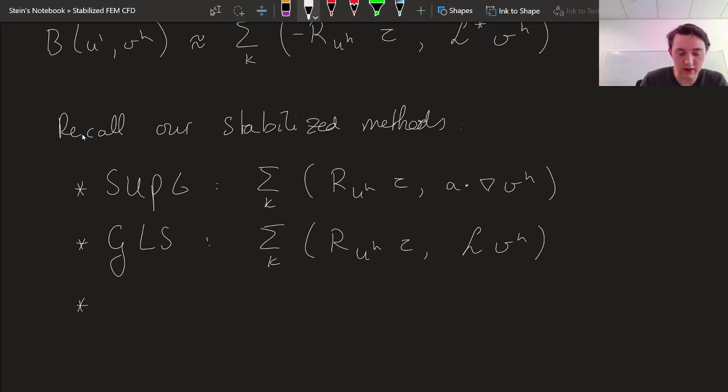And then the last one that I introduced but didn't really talk too much about yet was the VMS method, the variational multiscale method, as the sum over elements of minus the residual times the adjoint operator.